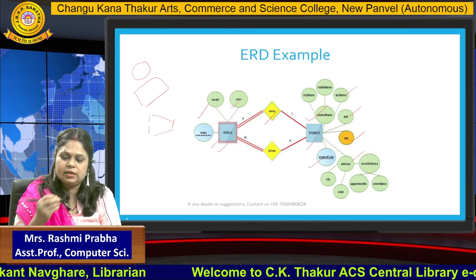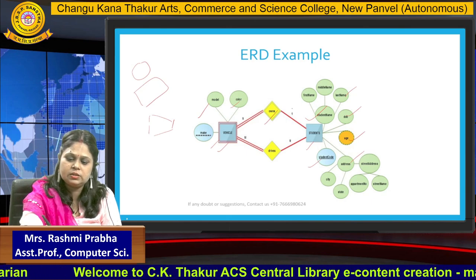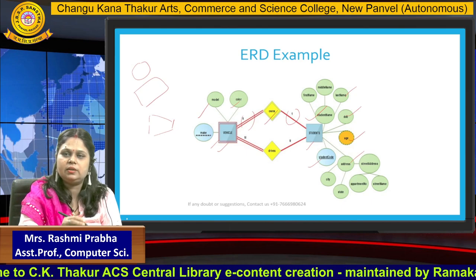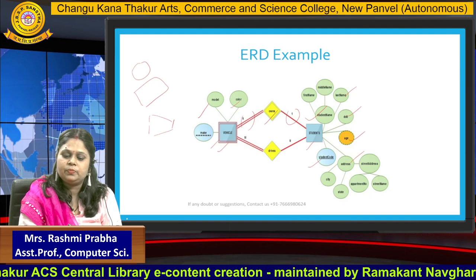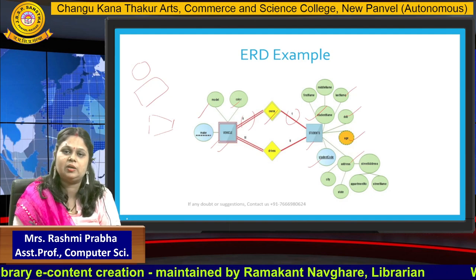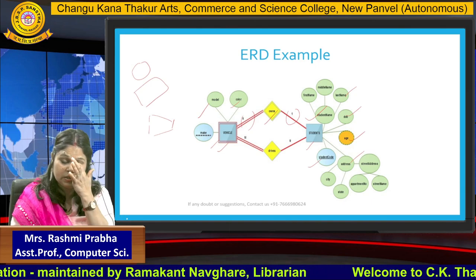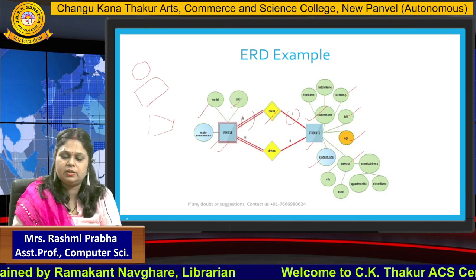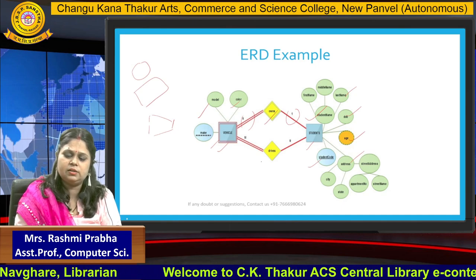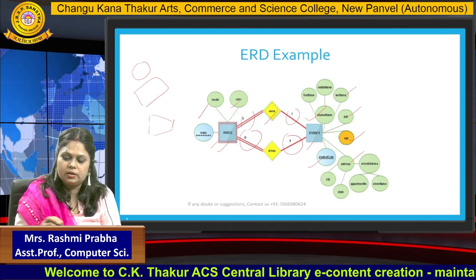Similarly, if a student owns a vehicle or a student drives a vehicle, you can see there are numbers written like one — so what are these? These are the mappings between student and the vehicle. Like one student can own many vehicles. A student can have a car, a bike, or another vehicle. A student can drive many different types of vehicles, and so many students can drive so many different types of vehicles. So these are known as relationships.